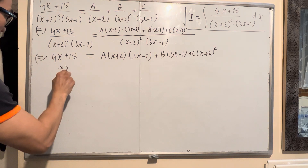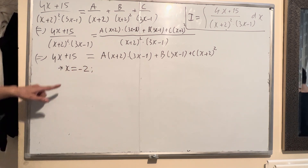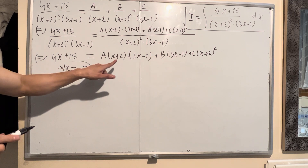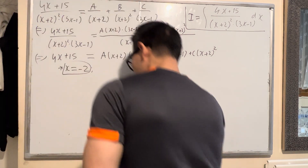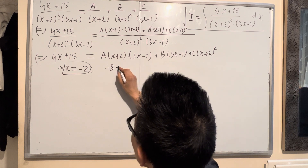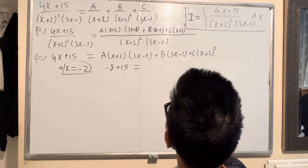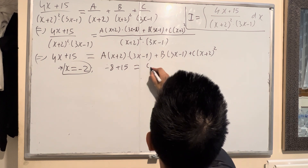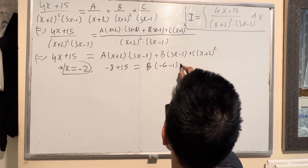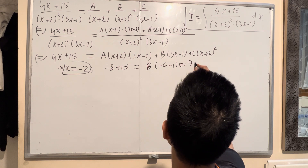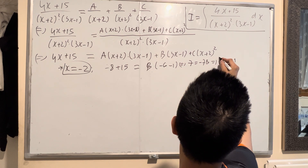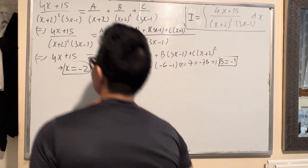First, substitute x equals negative 2. When you substitute x equals negative 2, you will cancel out A and C and find B. Left hand side with x equals negative 2 gives negative 8 plus 15, which is 7. Right hand side: B times negative 6 plus 1. So 7 equals negative 7B, and you find B equals negative 1.